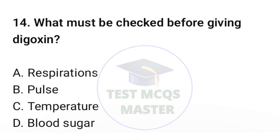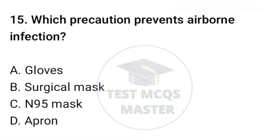Question number fourteen: What must be checked before giving digoxin? The correct option is B: pulse. Question number fifteen: Which precaution prevents airborne infection? The correct option is C: N95 mask.